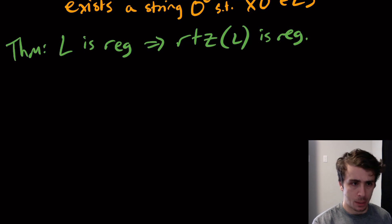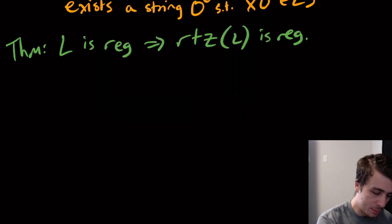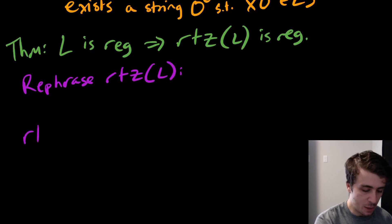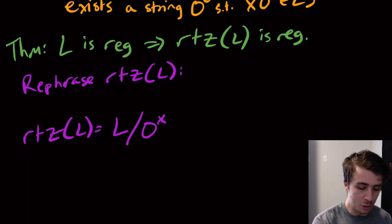How can we actually do this here? We can actually rephrase it in a different way. So rephrase the language RTZ of L in the following way: RTZ of L is the language L quotiented with 0*, the language of all strings that happen to have zeros. But it turns out that we need to add back in all of the strings that are in this set right here.